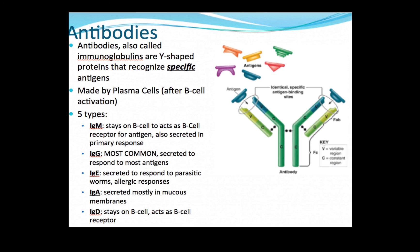There's a summary of the antibody classes on slide 69 of your lecture PowerPoints. IgM is secreted early in the primary response. It stays on the B cell and acts as a B cell receptor for the antigen.